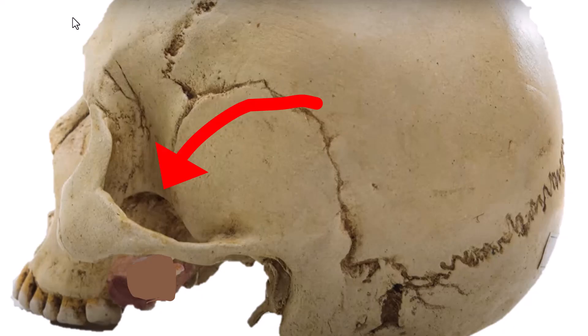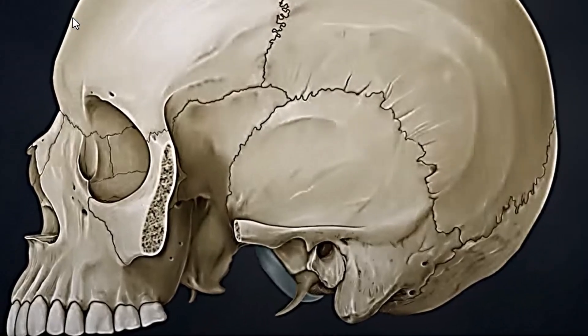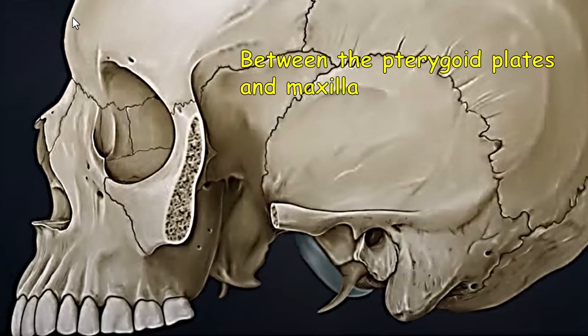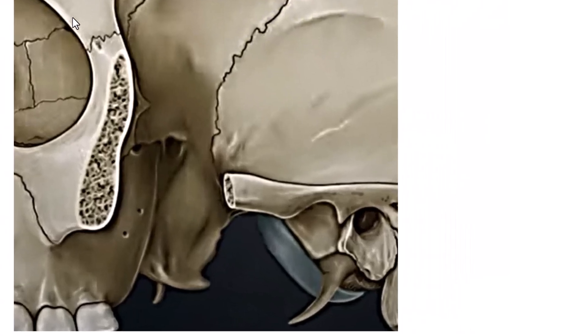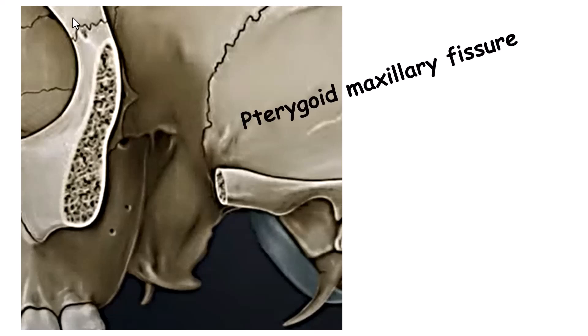To the lateral side, behind the zygomatic process is the infratemporal fossa — the space below the temporal bone. If you zoom in and look through, you can see the pterygomaxillary fissure. This is a fissure between the posterior part of the maxilla and the lateral pterygoid plates. If you get rid of the zygomatic process, you can see the fissure. This is one of the outside entrances to the pterygopalatine fossa.